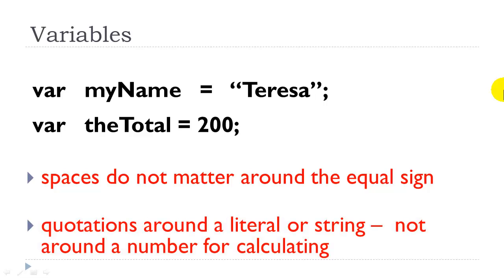Notice that if we have quotations around the value, it indicates a literal or string. We do not put quotations around a number because a number is primarily used for calculations.